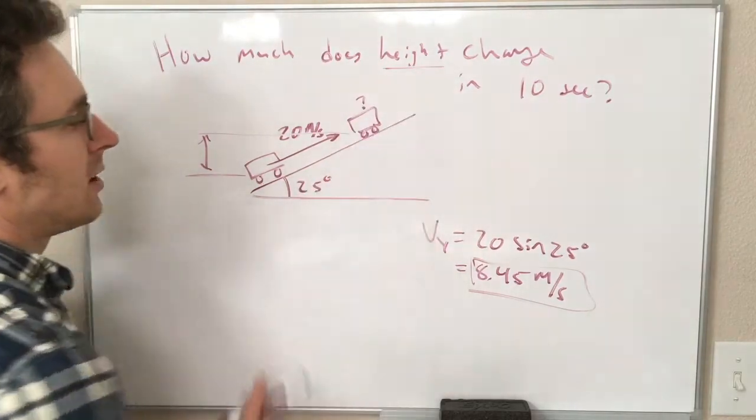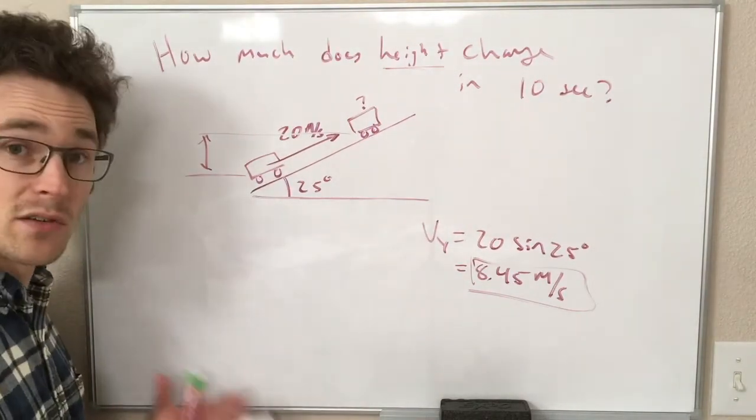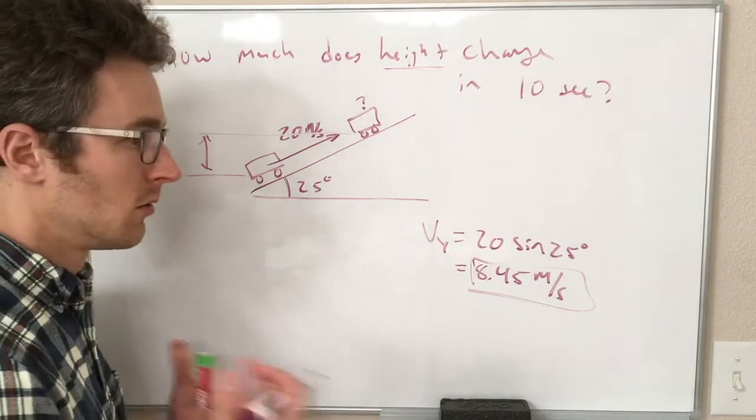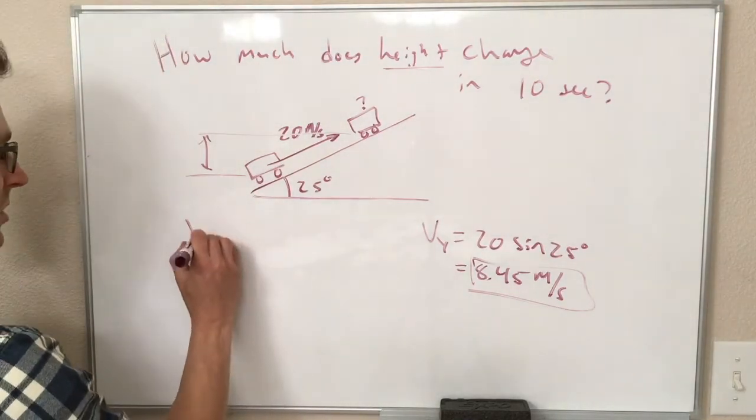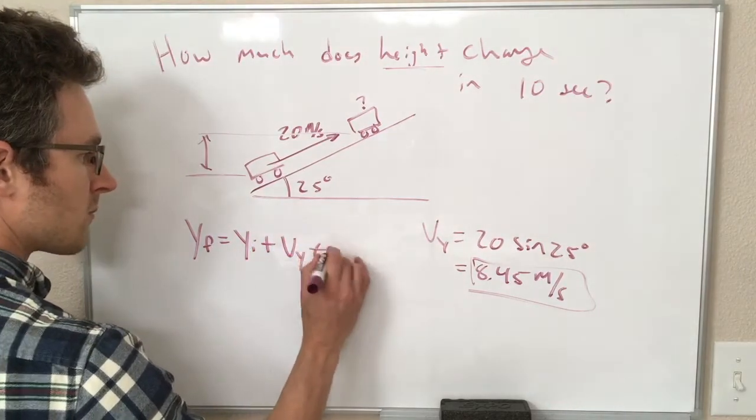So the height means we want to look at what's going on in the y direction, and things are moving at constant velocity, so we can use our constant velocity motion y direction equation, that is y final equals y initial plus Vy t.